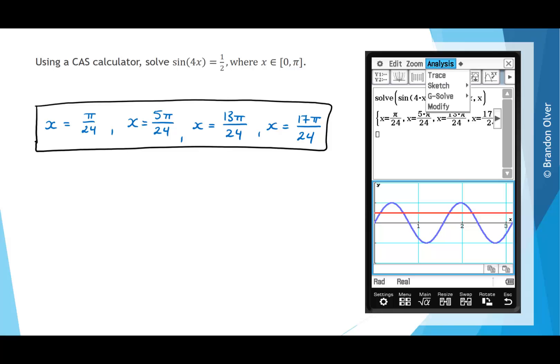If we go analysis, g-solve, intersection, that finds us our first intersection at about 0.13. If we hit execute, that will lock that point on the graph.